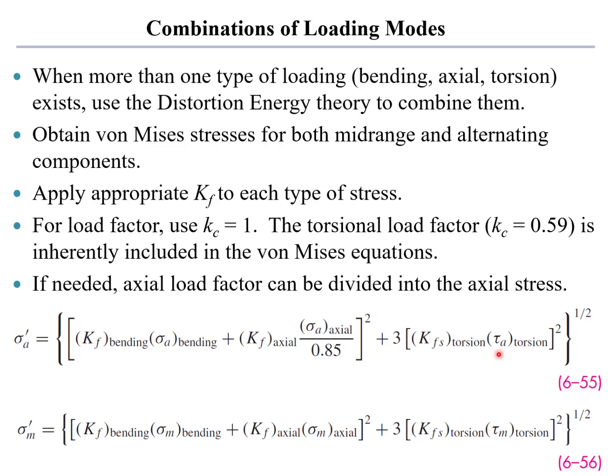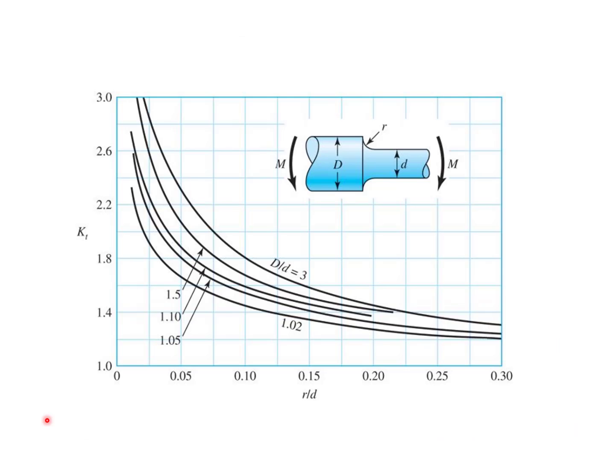We take the mean stress and multiply it by the fatigue stress concentration factor for axial loading. We find the torsional stress amplitude, the torsional mean stress, and multiply it by its appropriate fatigue stress concentration factor. Add it all together, and we get an equivalent stress amplitude and an equivalent mean stress, all of which can now go into our mean stress correction factors.